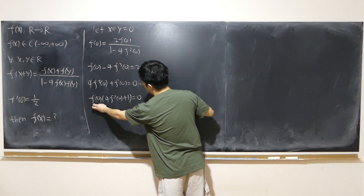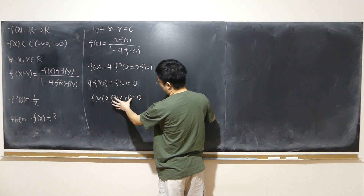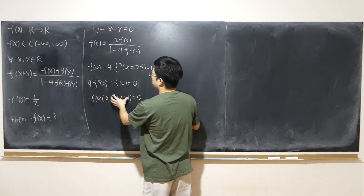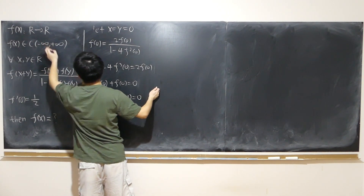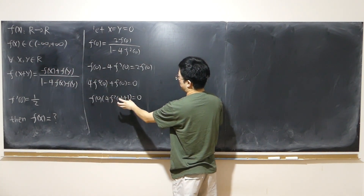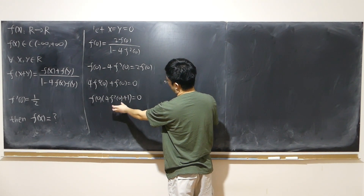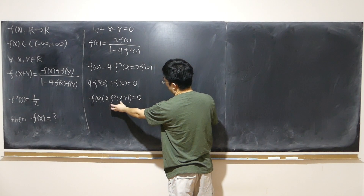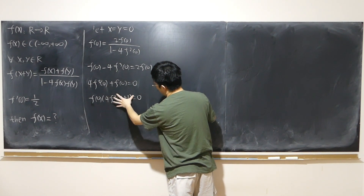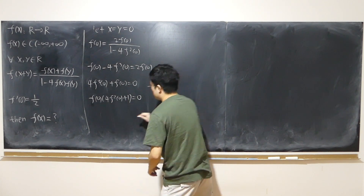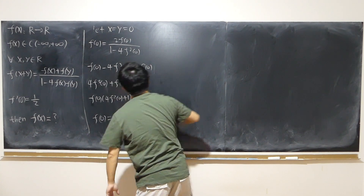Either f(0) equals 0, or 4f²(0)+1 equals 0. But 4f²(0)+1 cannot equal 0 because f is defined over real numbers and maps onto real numbers — real numbers squared are always non-negative, so adding 1 cannot give 0. Therefore, f(0) must equal 0.